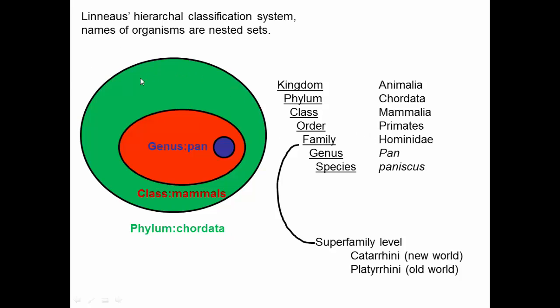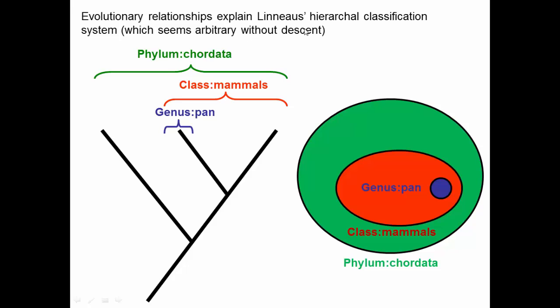This organization of living things into nested sets was apparent and obvious at the time of Linnaeus, but there was no actual explanation for why nature had to be this way. You could imagine creating organisms from scratch, taking bits and pieces from here and there, getting organisms that don't fall into such a categorization. But the observation was that life did fall into nested sets — and evolutionary relationships explain this hierarchical classification system.